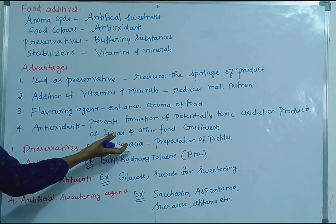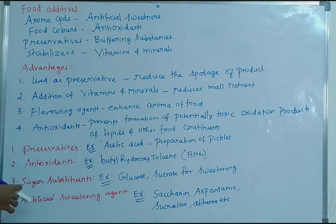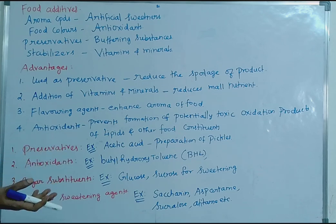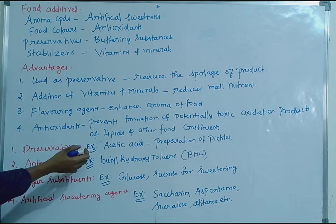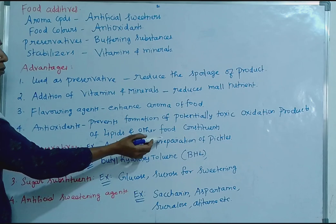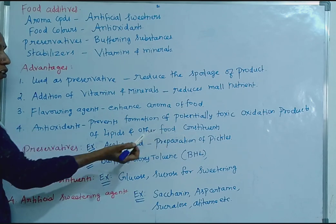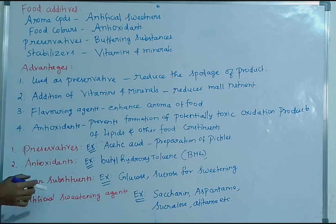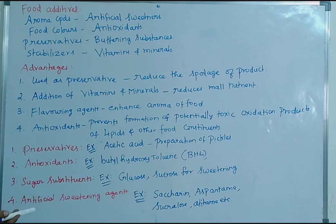For example, acetic acid is a preservative. It is used like pickles. That is why acetic acid is used for the preparation of pickles. Acetic acid is one example of antioxidants and preservatives.